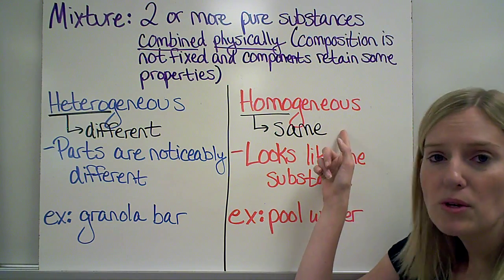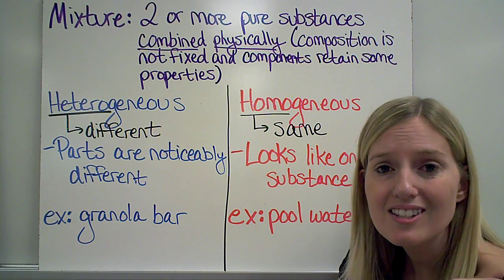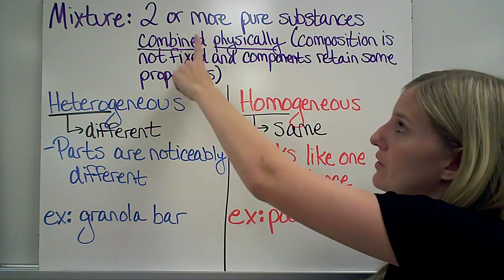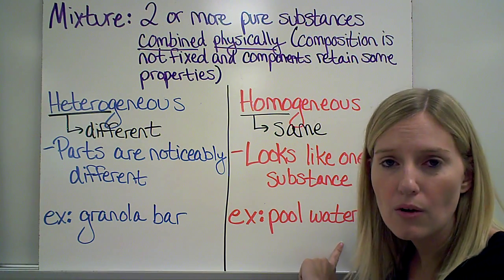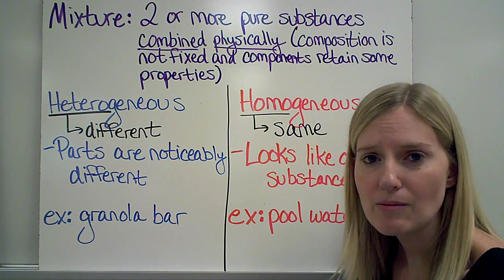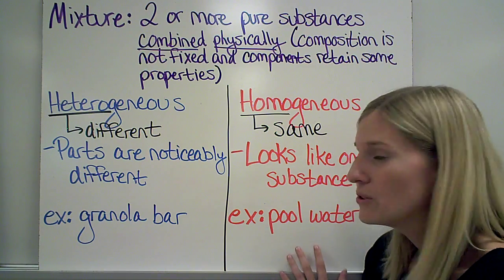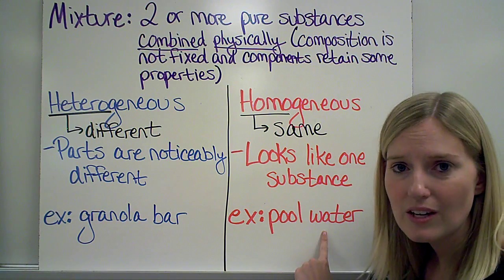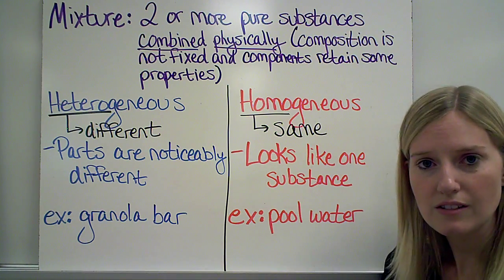Where, with a homogeneous mixture, the prefix homo means same. So it all looks the same throughout. It looks like there's one substance there, when really, there's more than one substance there. So an example of that would be like your water in a pool. The water there is not pure water. It has all kinds of chemicals in it to make sure that the water is safe for you to swim in. But you can't see those chemicals. So it all looks like there's one thing, when really, there is more than one thing. So that's what makes pool water a homogeneous mixture.